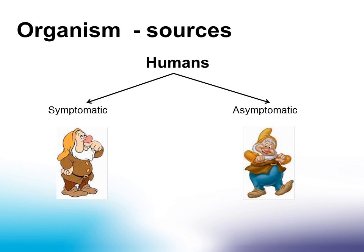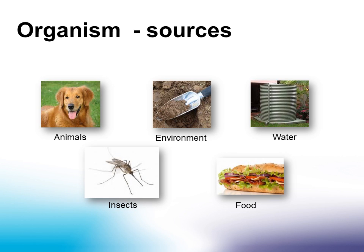There are many different sources of organisms, but the most common source of human infection is other humans. These can be people who have symptoms, or they may be asymptomatic, such as someone who is incubating a disease, a carrier, or is chronically infected. Other sources include animals, the environment such as soil, water, insects, and food.